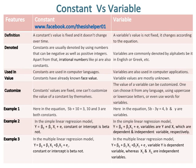In example 3, in the multiple linear regression model, constant or intercept is beta not. Whereas in the multiple linear regression model, variable y is dependent variable, whereas x1 and x2 are independent variables.